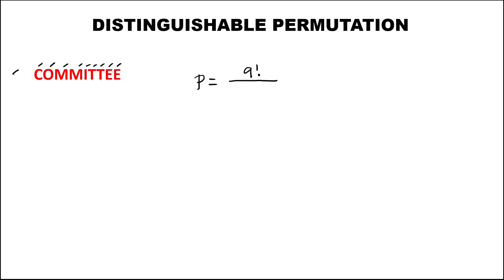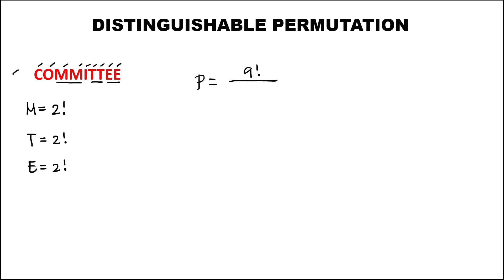For this given word, M is a repeated letter. Since we have 2 M's, this is 2 factorial. T is also a repeated letter, and since we have 2 T's, this is also 2 factorial. E is also a repeated letter, and we have 2 E's, so this is also 2 factorial.